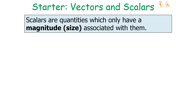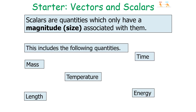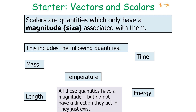Scalars are quantities which only have a magnitude or a size associated with them. This includes the following quantities: mass, temperature, time, energy, and length. All these quantities have a magnitude, but they do not have a direction that they act in — they just exist.